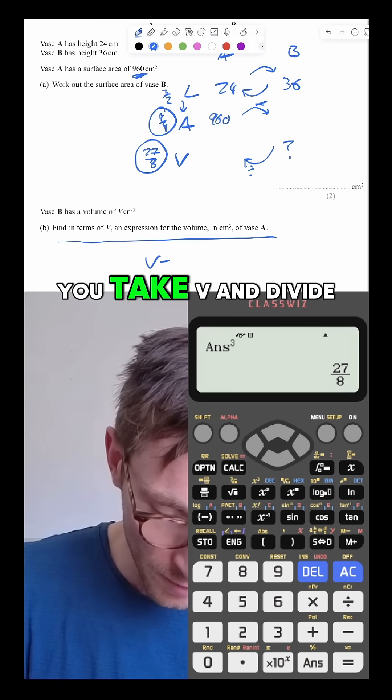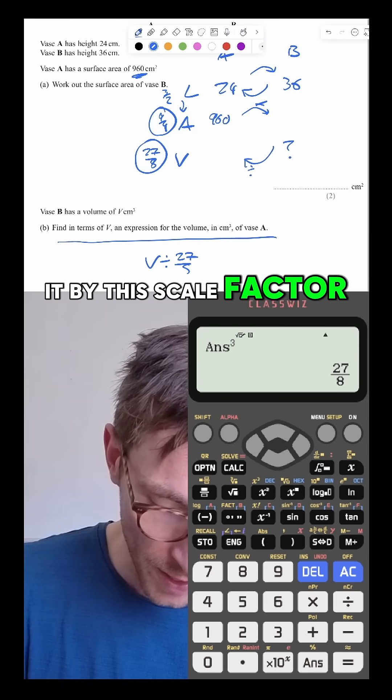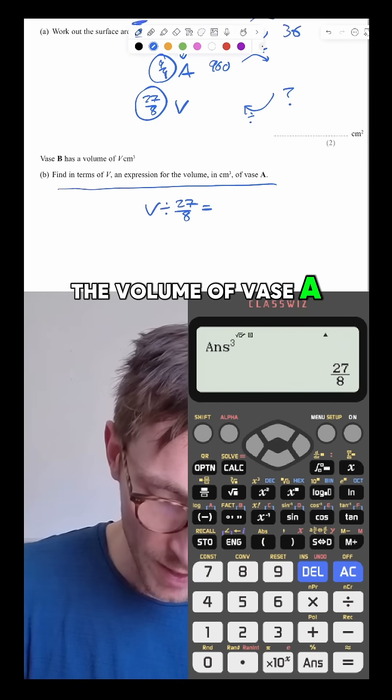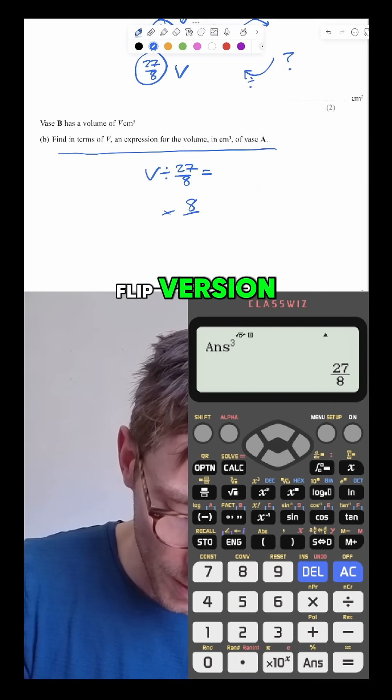So if this was V, you take V and divide it by this scale factor, and this would get you the volume of vase A. Divide by fractions is the same as timesing by the flipped version.